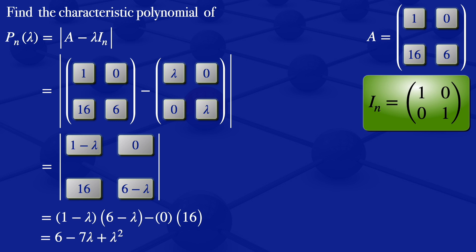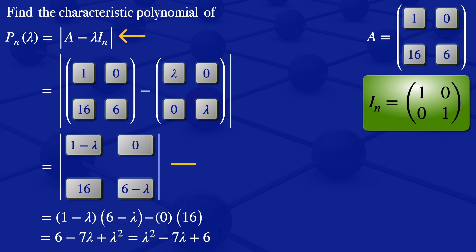Usually when we write polynomials, we write the term with the highest power first, so we rewrite this as lambda squared minus 7 lambda plus 6. One thing to note is that the identity matrix has 1s on the diagonal, so multiplying by lambda gives a matrix with lambdas on the diagonal. Subtracting that from A just means subtracting lambda from the diagonal elements of A. So we can move directly from the original matrix to that step — there's no need to show the intermediate steps.